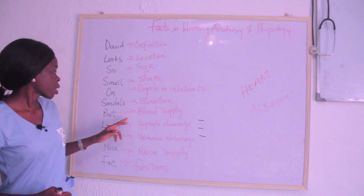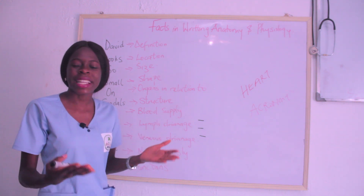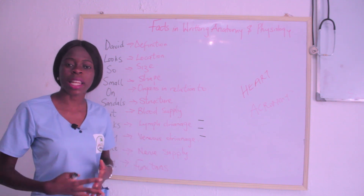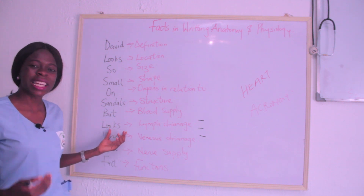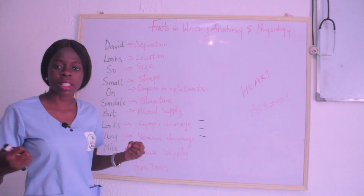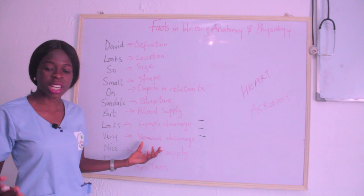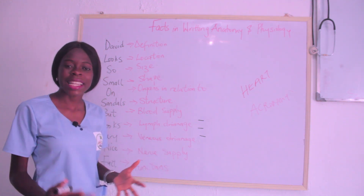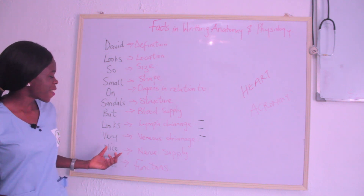Then B stands for Blood Supply — what is supplying the heart with blood and nutrients? It is the coronary artery. The next L stands for Lymph Drainage, which talks about the lymphatic systems that drain the heart. Then V stands for Venous Drainage — the cardiac veins, which take the deoxygenated blood away from the heart.